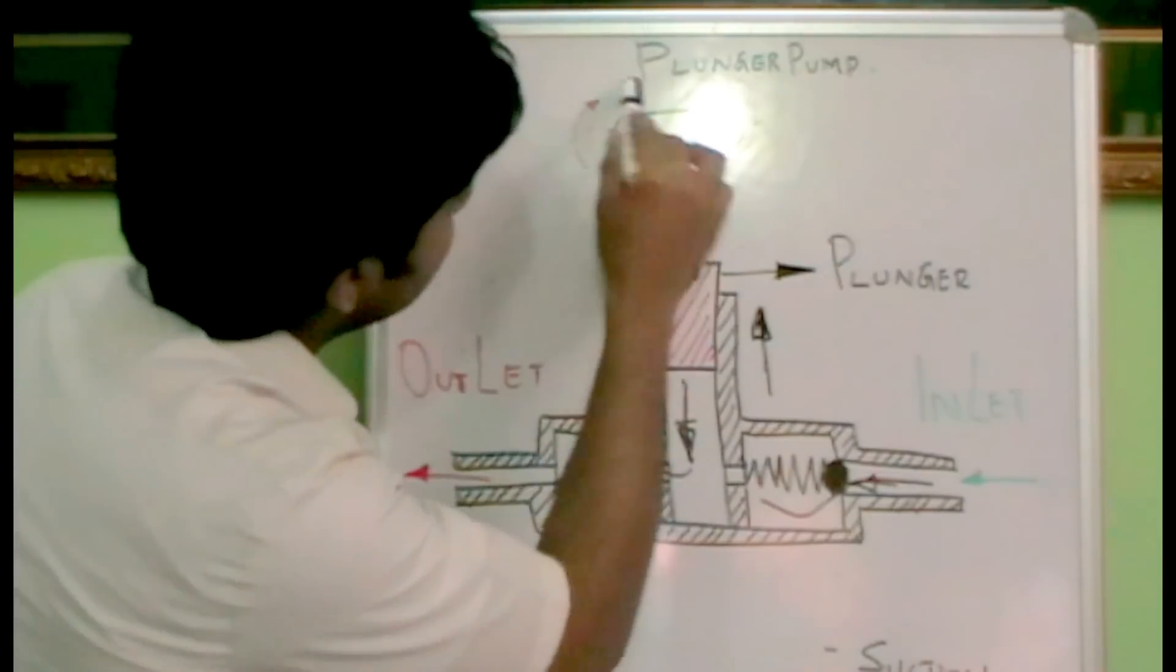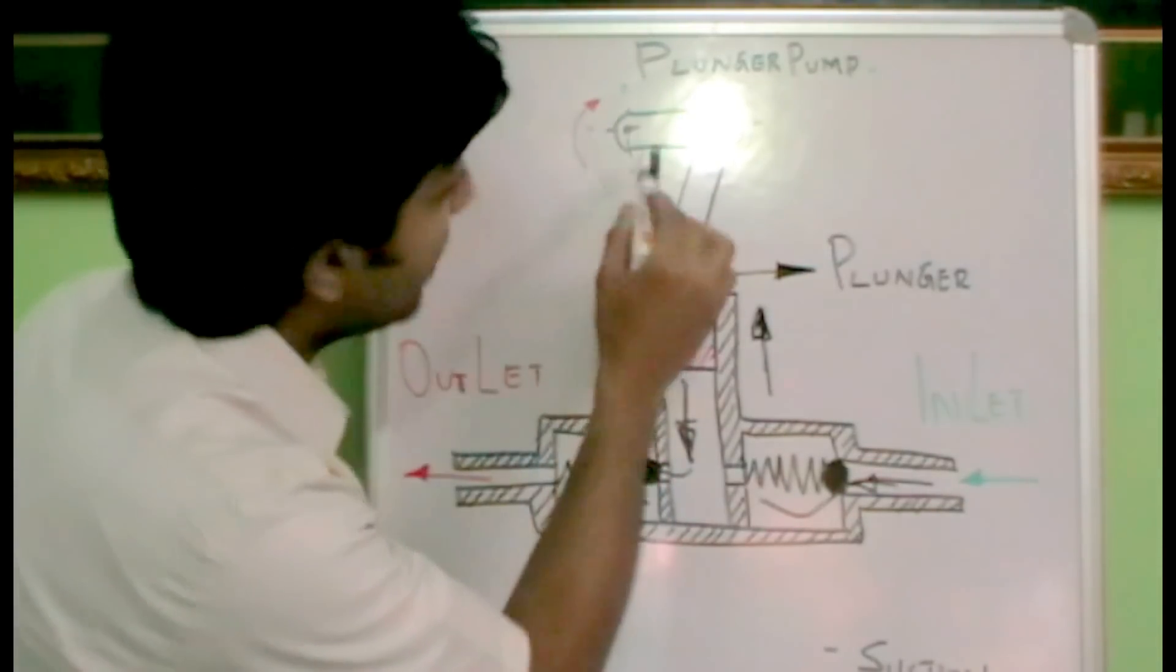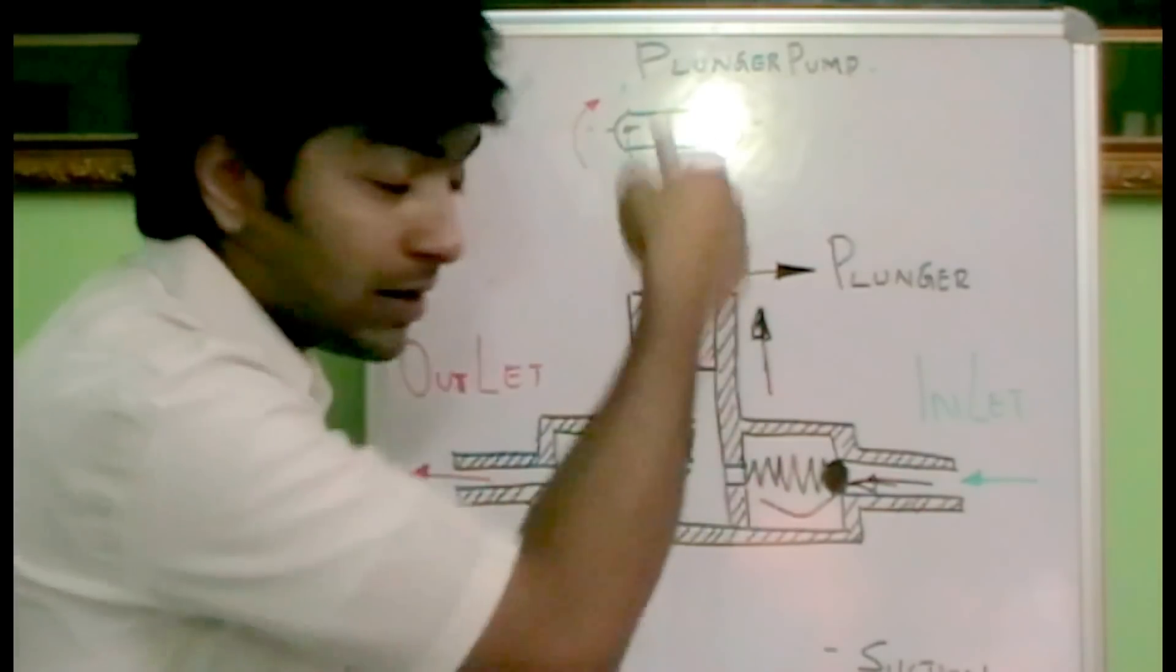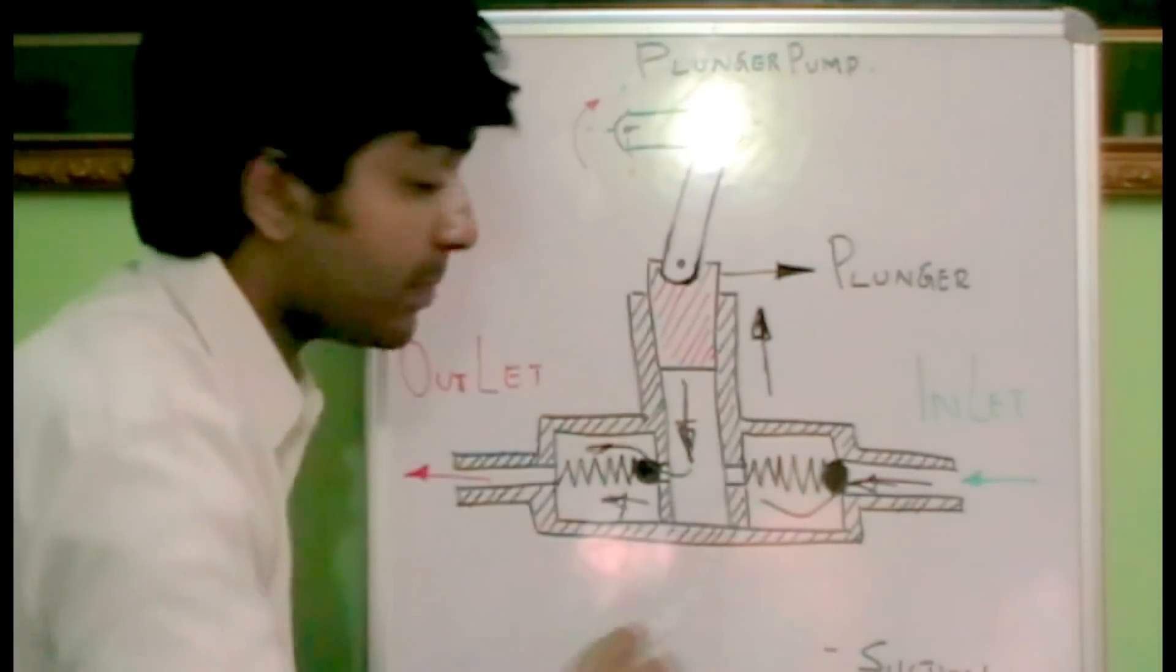Let's see how it works. Here it gets the drive as these rods are connected. This results in the movement of the plunger up and down.